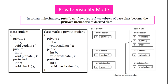In private visibility mode, public and protected members of the base class become the private members of the derived class. Using the same example of class student and class marks, class marks now inherits class student privately — written as class marks colon private student. After inheritance, the private section of class marks will contain a and read data (its own members), but it also contains y and put data (public members of class student) and z and check (protected members of class student). So both the public and protected members of class student are moved to the private section of class marks.